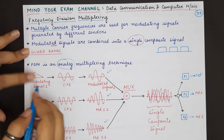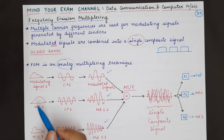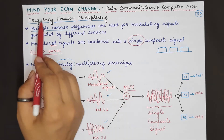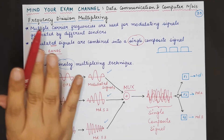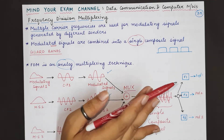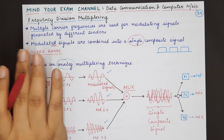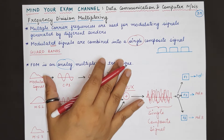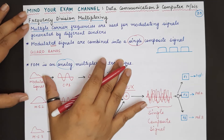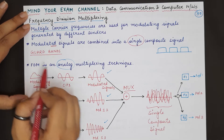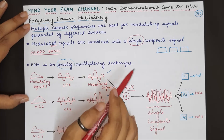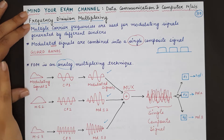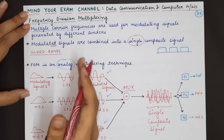Analog basically means that the sending devices must generate analog information. Digital information, if it has to be transmitted using frequency division multiplexing, must first be converted into an analog signal — we have also studied how to send digital data using analog carrier frequencies. You can refer to our playlist for those techniques, but frequency division multiplexing will work with analog signals only. They can be directly generated by the sender or first converted from digital data to analog signals and then used.